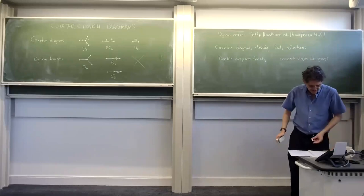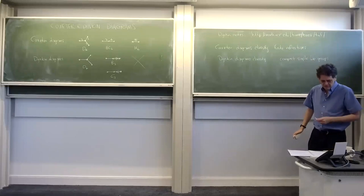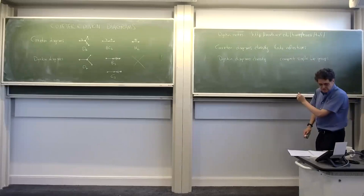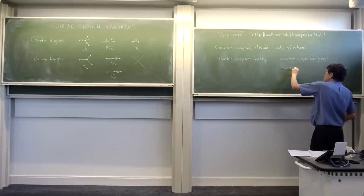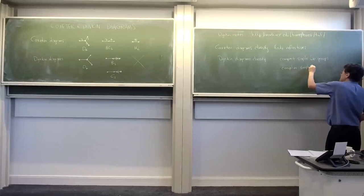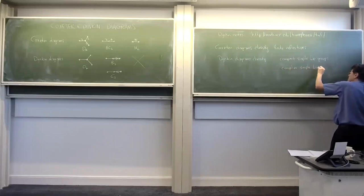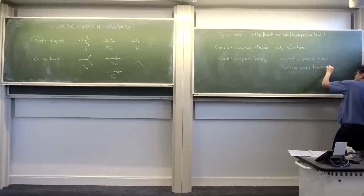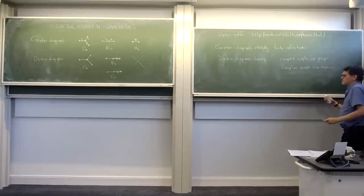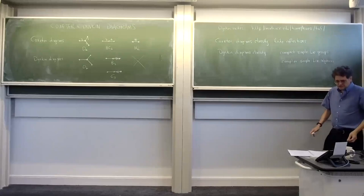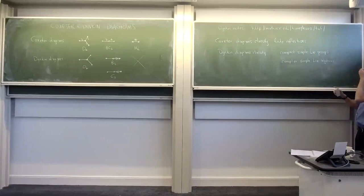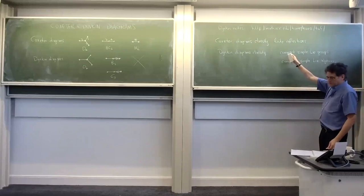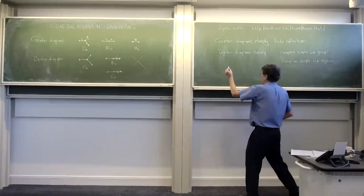Dynkin diagrams classify a bunch of things. Some important ones are compact simple Lie groups. A Lie group is a group that's also a manifold, so it can be compact. Every compact Lie group has a kind of abelian part and a simple part — the opposite of being abelian. If you focus on the simple or semi-simple part, it can be broken into pieces. These are the basic building blocks of compact Lie groups that are as far from being abelian as possible, and they're incredibly important throughout math and physics. For example, when designing a grand unified theory, one ingredient should be a compact simple Lie group describing the gauge theory.